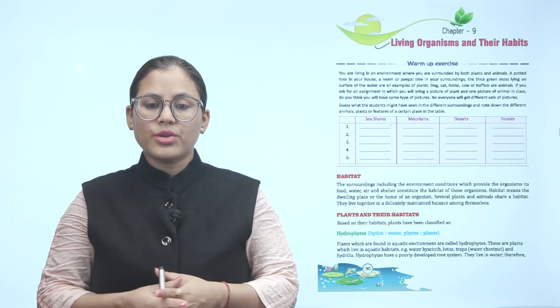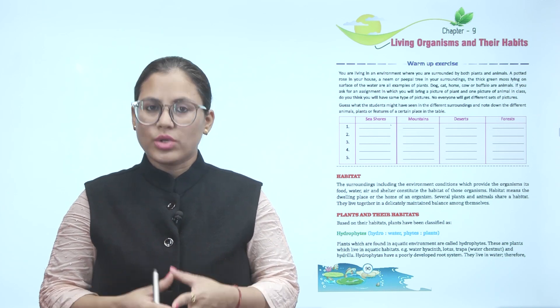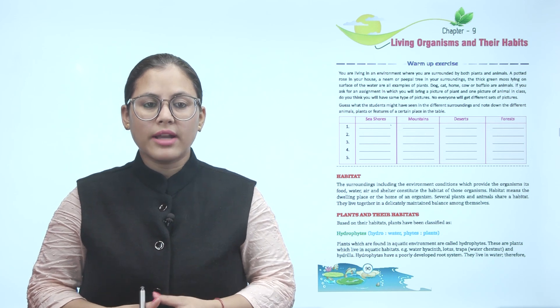Plants and their habitats. Based on their habitats, plants have been classified as hydrophytes. Hydro means water and phyte means plants. Plants which are found in aquatic environment are called hydrophytes. These are plants which live in aquatic habitats. Example: water hyacinth, lotus, trapa, water chestnut and hydrilla.